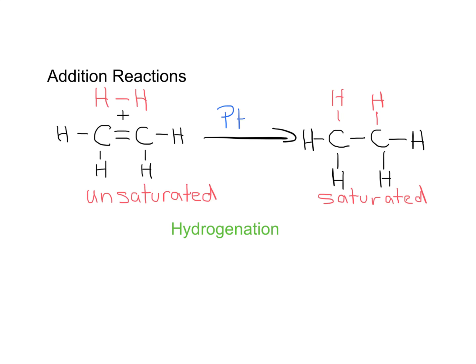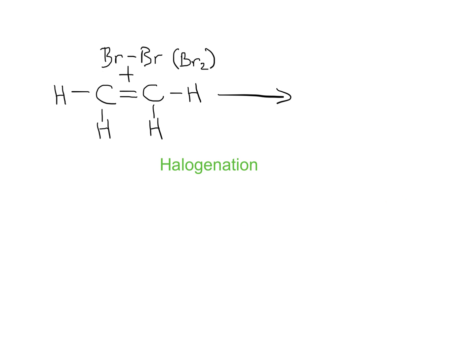Here we've got an example where we're going to add a halogen — that's halogenation. Halogenation is the treatment of an unsaturated compound with a halogen, and we've chosen bromine in this case. This doesn't need a catalyst at all; the reaction goes very quickly at room temperature. Can you draw the product? Pause the video, try to predict and name the product, and we'll do it together.